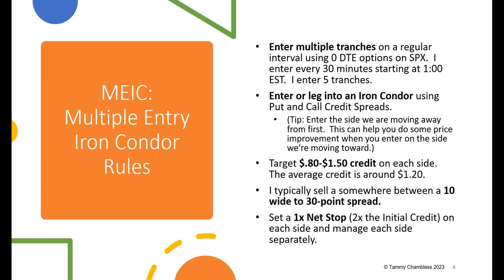I typically sell somewhere between a 10-point wide and 30-point wide spread, and I vary the width to control the credit. In my first video I was selling 25-wide spreads, but now I adjust up or down as needed - that may be my starting point. Then I set a 1x net stop on each side, which means setting the stop at two times the initial credit. That gives you a 1x net loss on each side if you get stopped out, and I set separate stops on each side, managing each side separately.